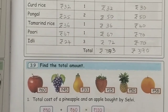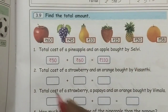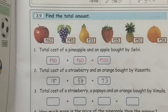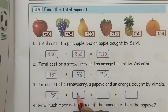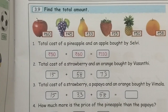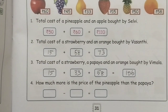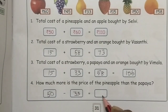Next one, find the total amount. The total cost of a strawberry and orange: the total cost of a strawberry is 15, orange is 58, 7, 3. The total cost of a strawberry is 15, papaya is 33, orange is 58. Then how much more is the price of pineapple than papaya? Pineapple is 50, papaya is 33, subtract: 17.